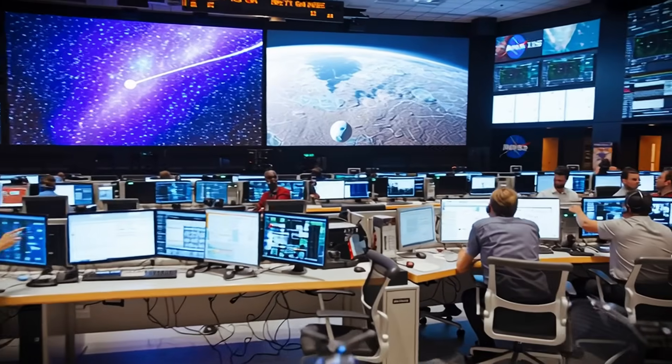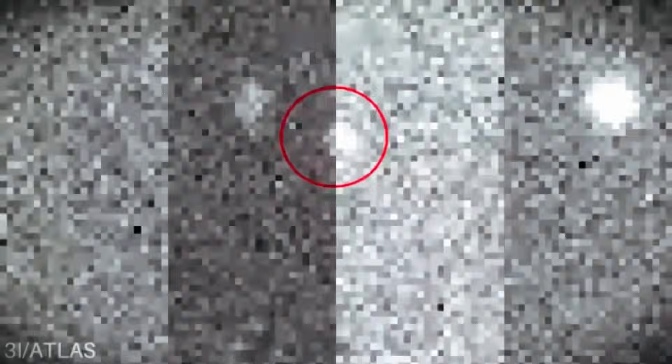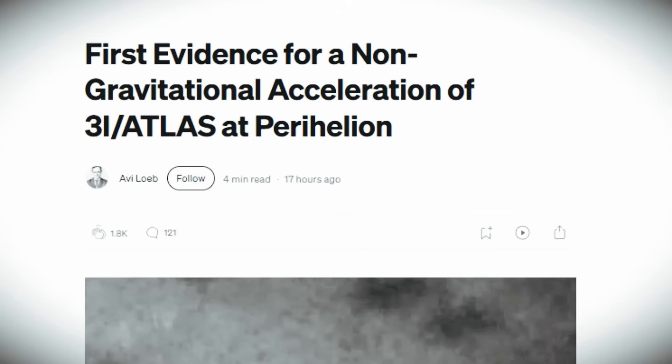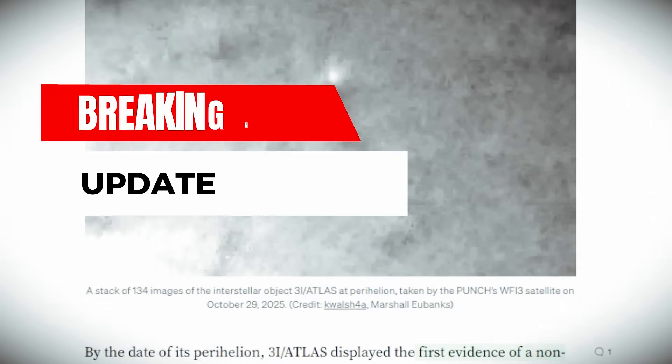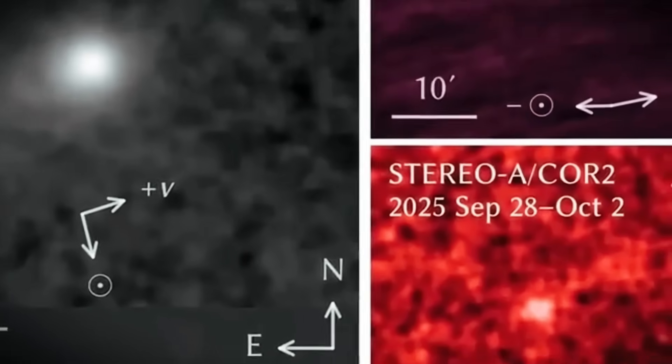3. Atypical mass and velocity. Estimates indicate that Atlas's nucleus possess dimensions above the average for comets, combined with high displacement velocity. This association is extremely rare and may indicate material more resistant than common ice and dust.